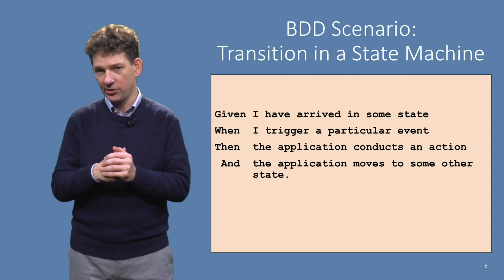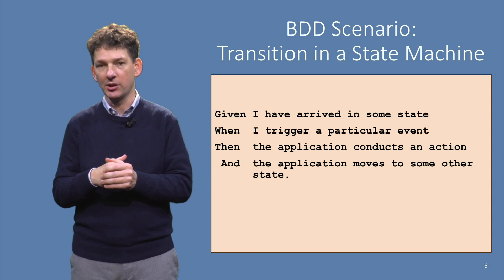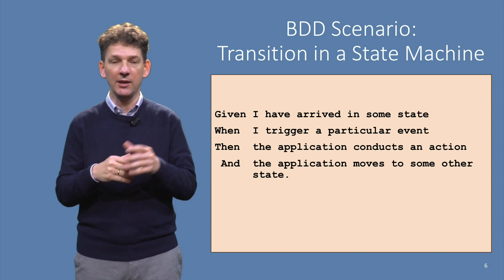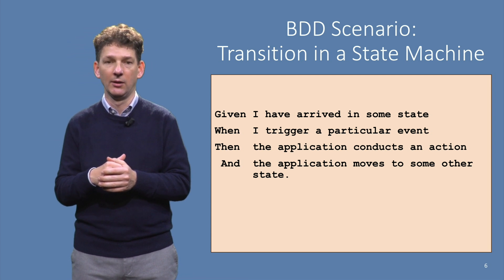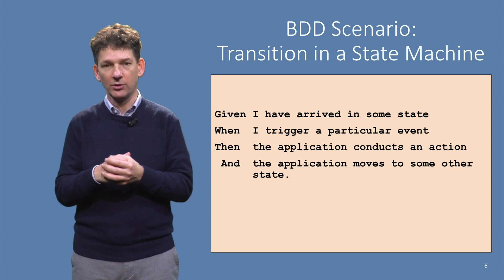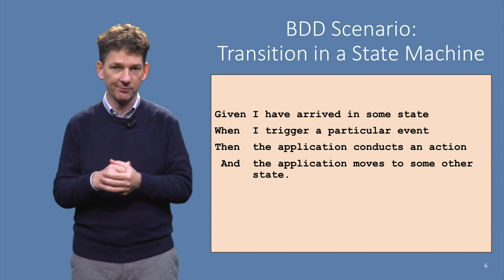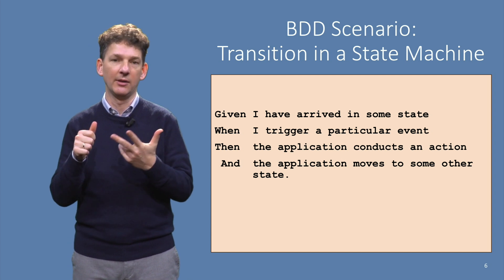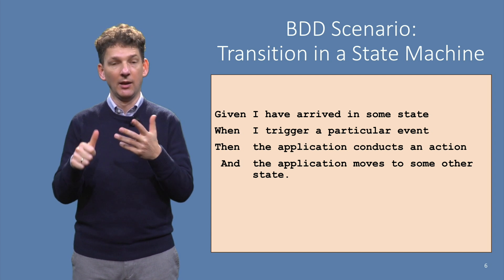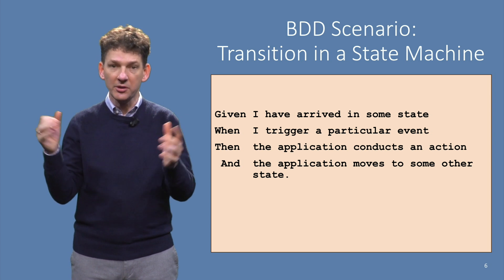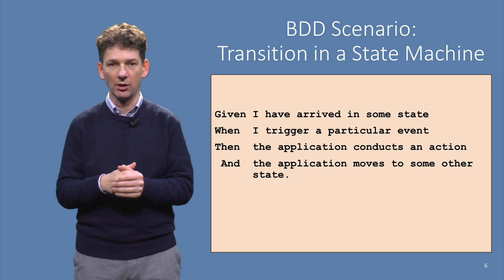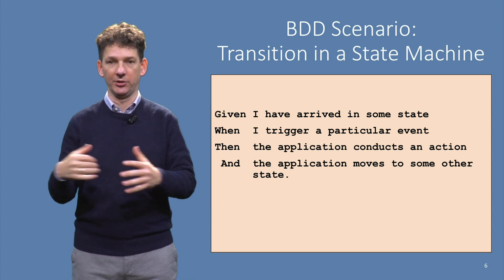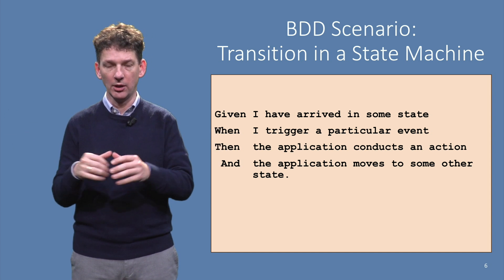Given our knowledge of state machines, we can now recognize that each BDD scenario can be considered a state transition, in the given-when-then format. Adopted like this, BDD scenarios offer a way to implement state diagrams: given that we are in one particular state, when we trigger an event, then we reach another state. Each scenario is just one transition, and the glue between all these scenarios is the actual state machine. Drawing the state machine gives us the overarching picture of how the user can move from one scenario to another.